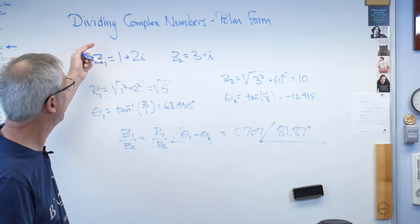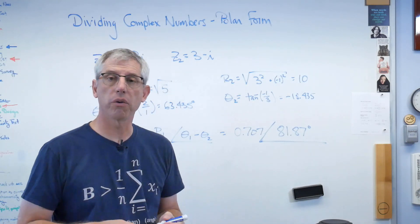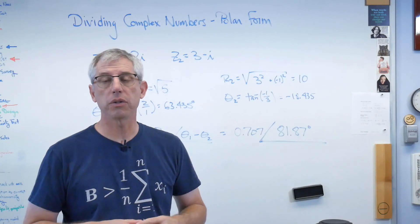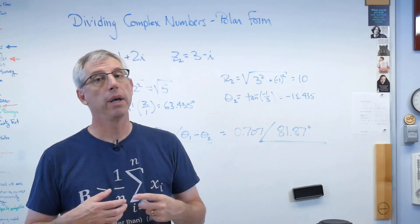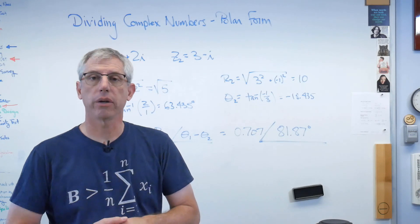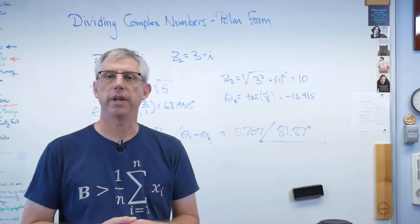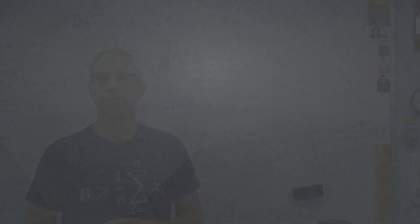So, there you have it. This is how to divide complex numbers in polar form. It gives the exact same answer as you get in rectangular form. They're mathematically identical. I hope this helps. We'll talk to you next time. Bye.